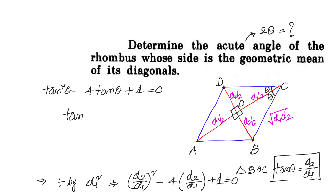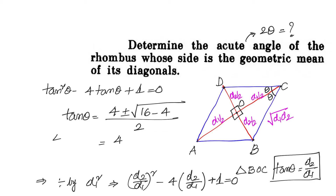Using the quadratic formula, tan θ = [4 ± √(16 - 4)] / 2 = (4 ± √12) / 2 = (4 ± 2√3) / 2, which equals 2 ± √3.